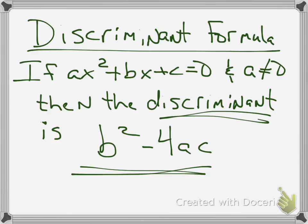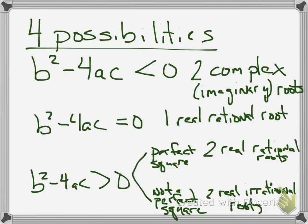Okay, so there are four possibilities for the discriminant. If it's less than 0, you get two complex imaginary roots. If it's equal to 0, you get one real rational root. And if it's greater than 0, there's two possibilities there. Either it's a perfect square, which means you could take the square root of it and it would come out even, which would give you two real rational roots, or it's not a perfect square, which gives you two real irrational roots.